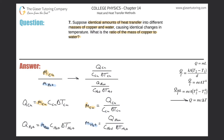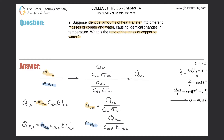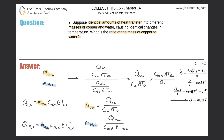This looks like a fraction within a fraction — like inception. To simplify, I take the numerator fraction and multiply it by the reciprocal of the denominator fraction. That gives us: Q of copper divided by the specific heat of copper times the change in temperature of copper — multiplied by the specific heat of water times the change in temperature of water — all divided by Q of water.